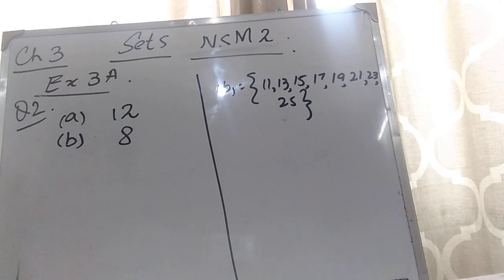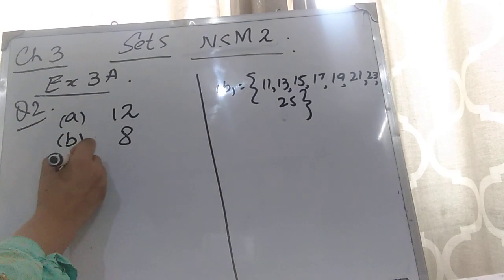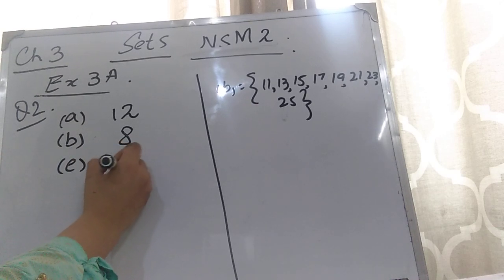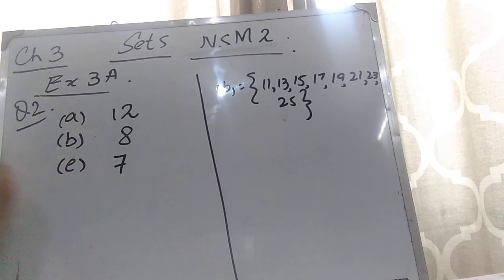Parts C and D — you can do those yourself. Now for part E: colors of a rainbow. You know that there are 7 colors of a rainbow, so the number of elements is 7.